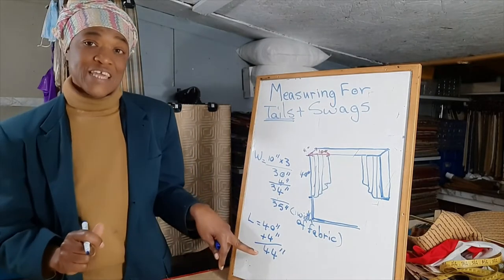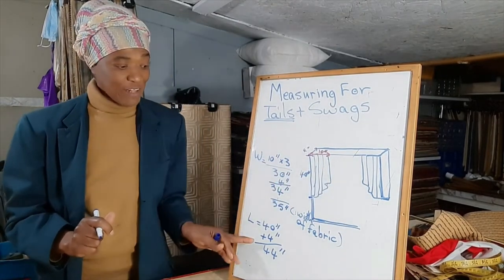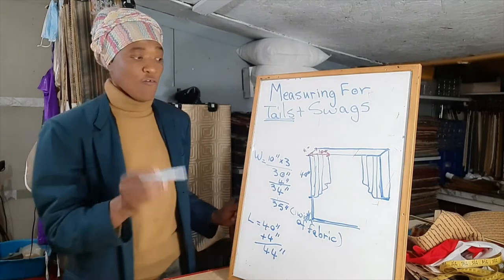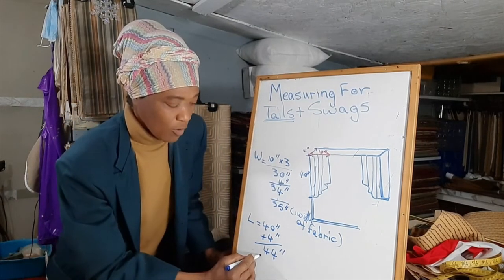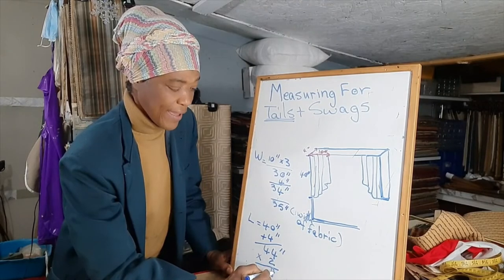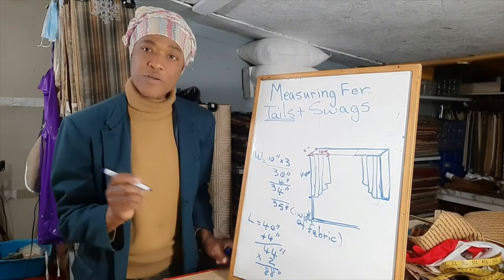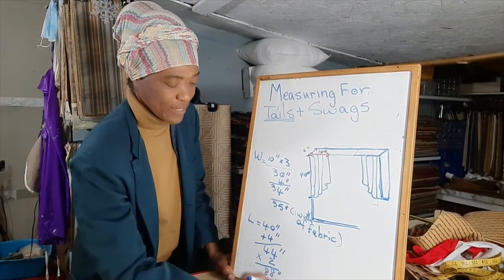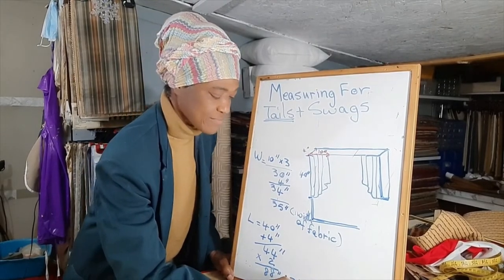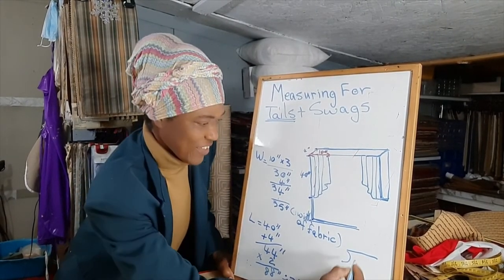Now let's see how much fabric we will need to make two tails. This calculation was for one tail, so if we need 44 inches for the length of one tail, for two tails we multiply that by two: 44 times 2 is 88 inches. In order to find out how many yards we need, we divide 88 inches by 36.